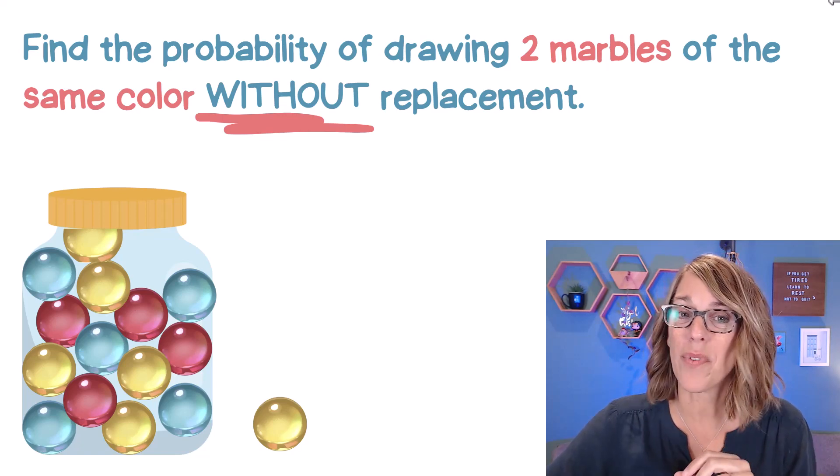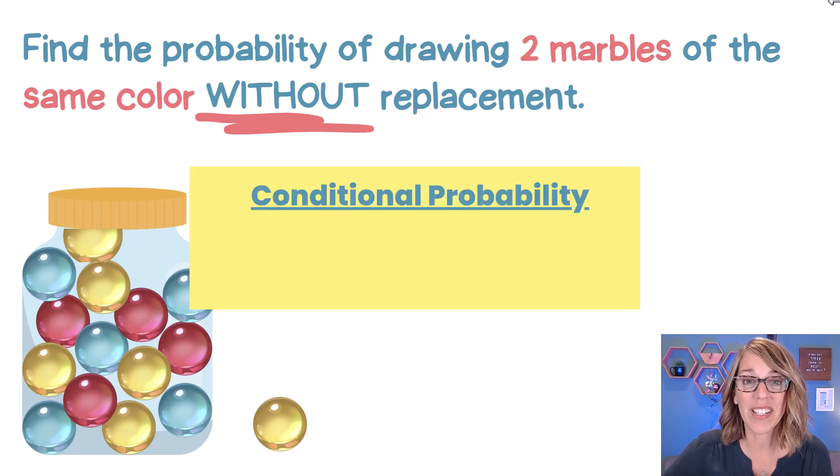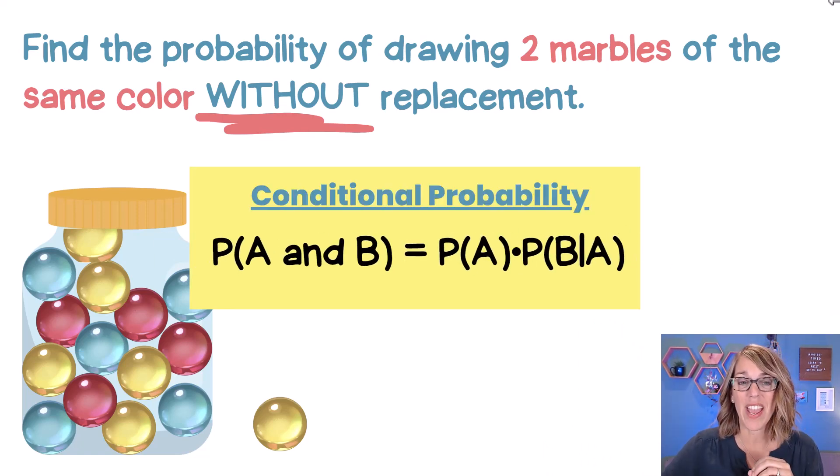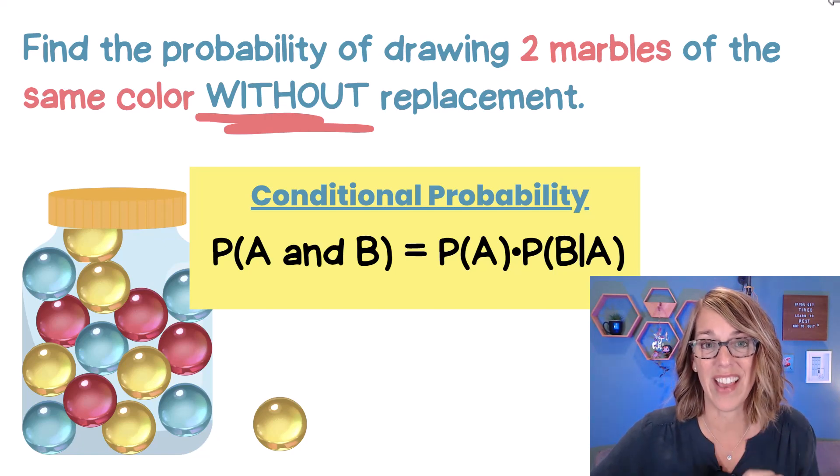Now we're going to need a couple of formulas, but I'm going to make it so much easier. The first one that we need is the conditional probability formula. The probability of A and B is the probability of A times the probability of B given A, but don't worry, I'm going to make it so much easier than that.